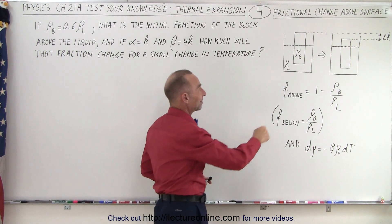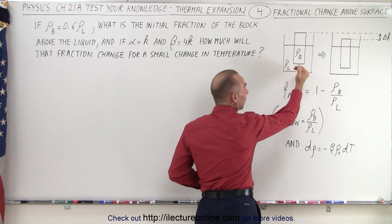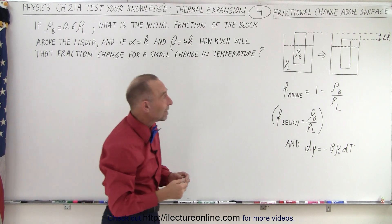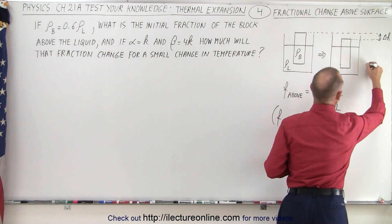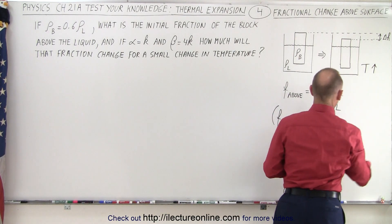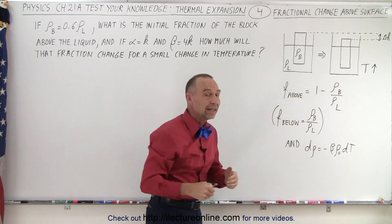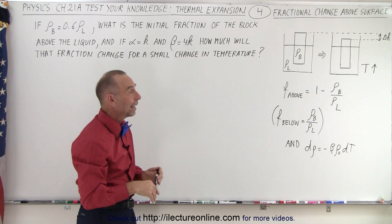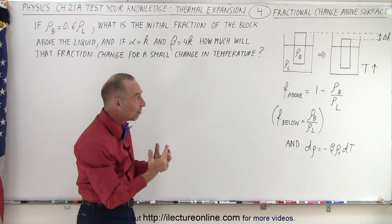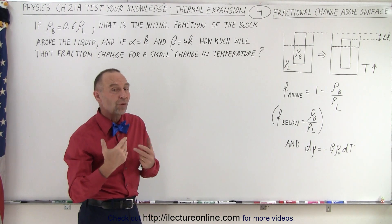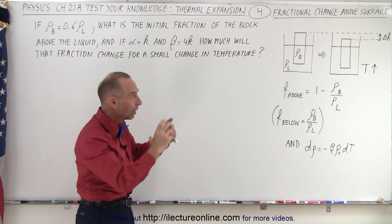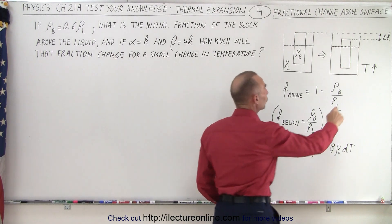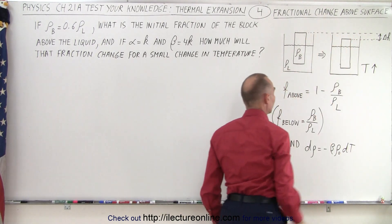If the density of the block is less than the density of the liquid, part of the block will be above the surface. Now if we increase the temperature, the density of the liquid will decrease and the density of the block will decrease, as both will expand. If we assume the density of the liquid changes more drastically than the density of the block, the block will sink down into the liquid a little more, resulting in a small difference in the height above the surface.